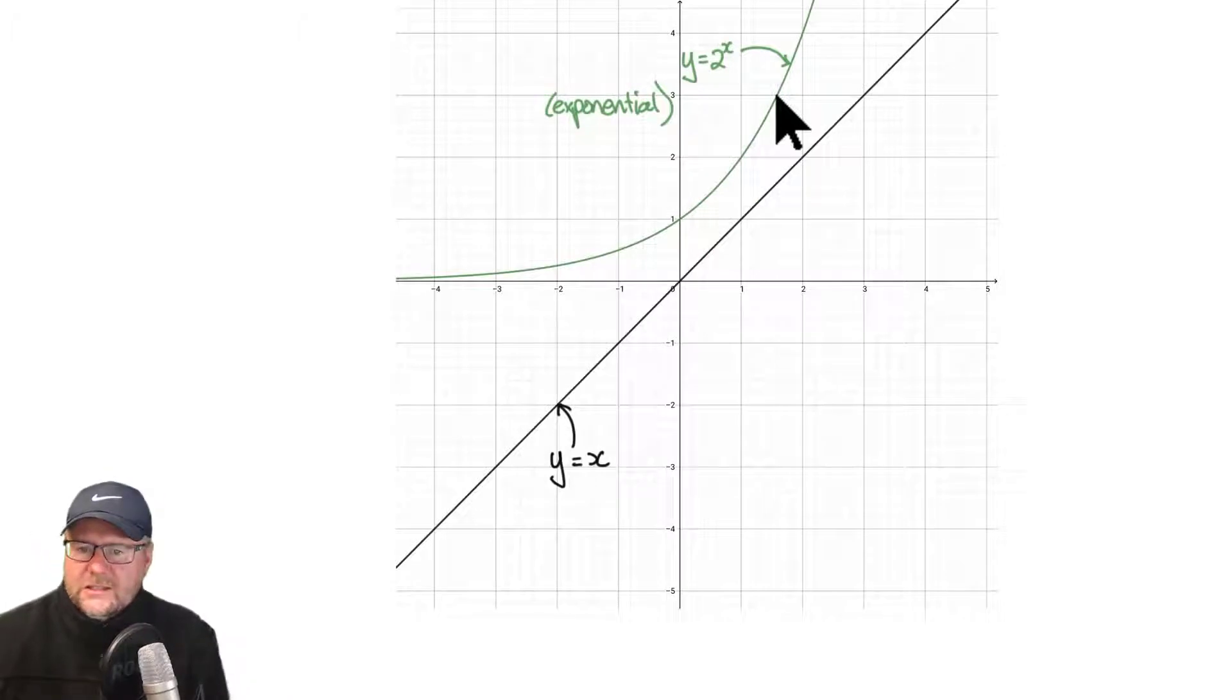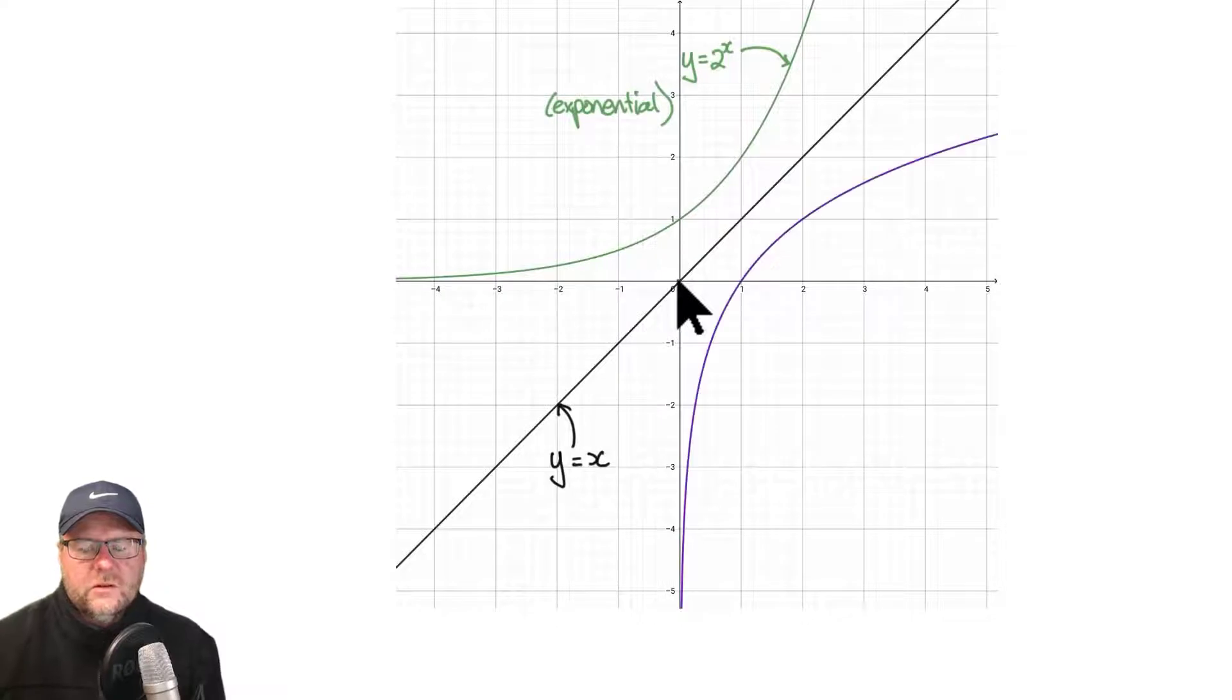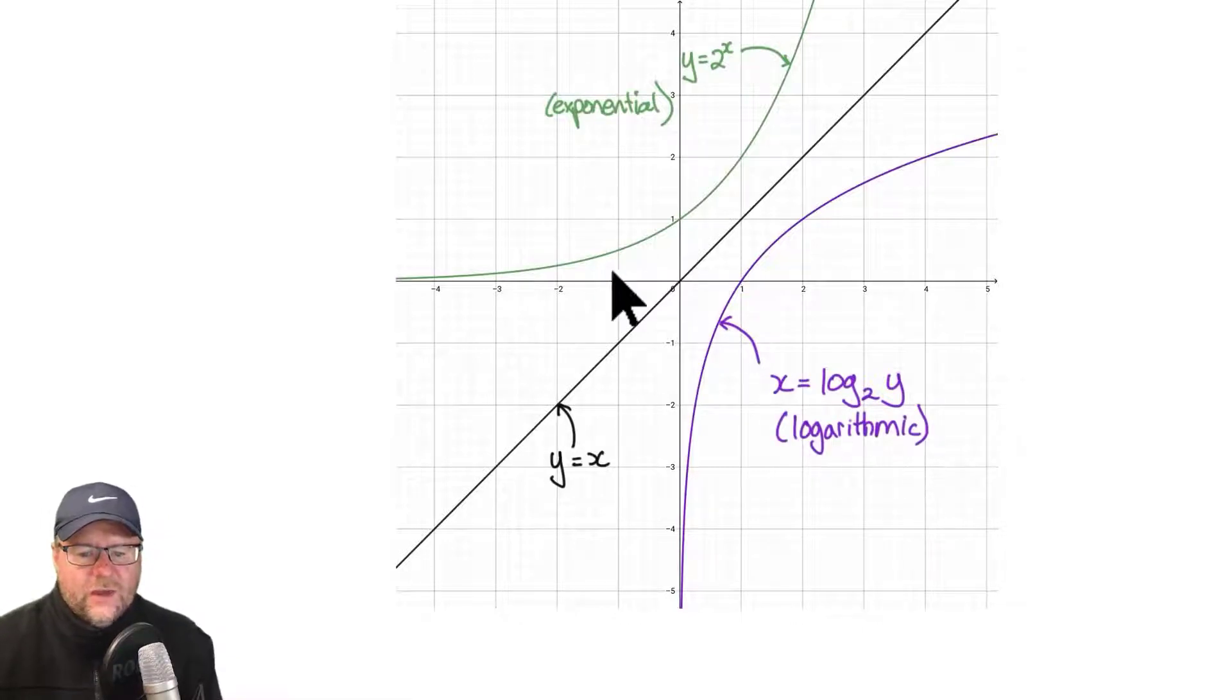If I take this line here, this is just a linear line y equals x that runs through the origin. We're going to use that as a reflection line. So I'm going to reflect that exponential curve onto the other side. This curve has the equation x equals log base 2 y. And we call this a logarithmic curve. You can see this connection starting to emerge between exponentials and logarithms.